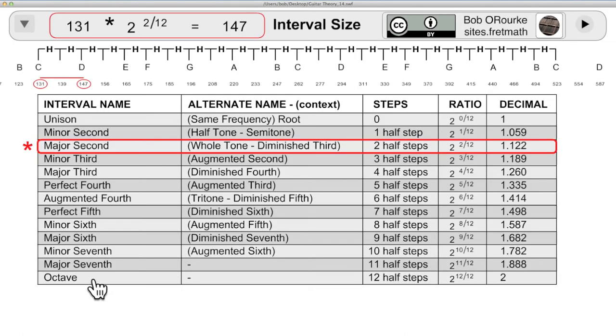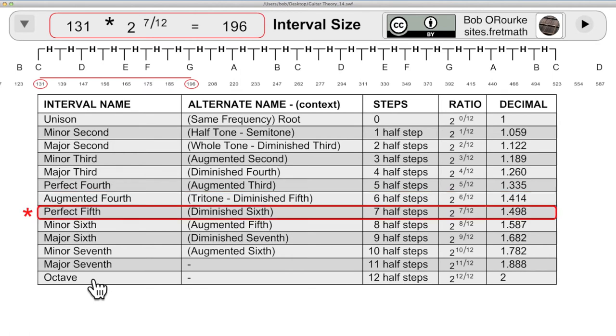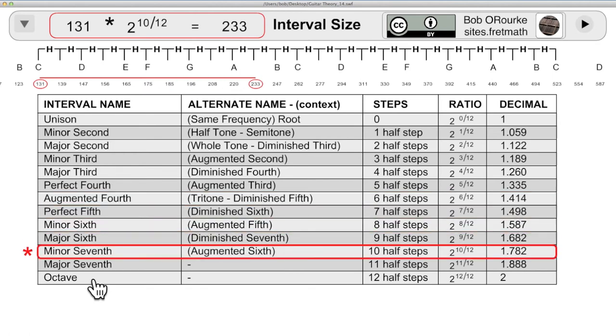So, on the guitar, you reduce the size of the perfect fifth by a very small amount. And now, every note on the guitar is separated from every other note on the guitar by a multiple of the twelfth root of two.